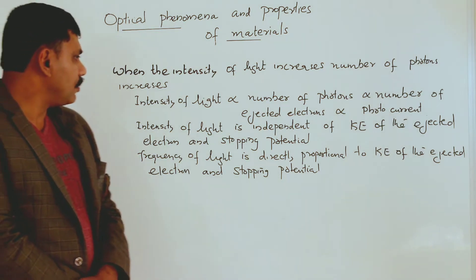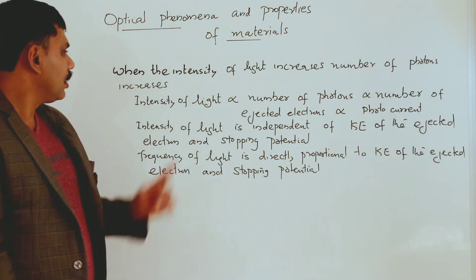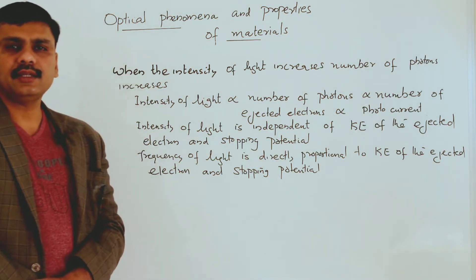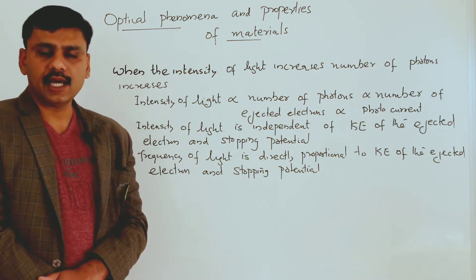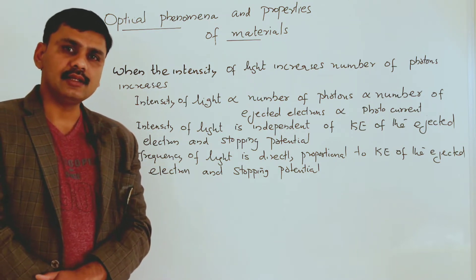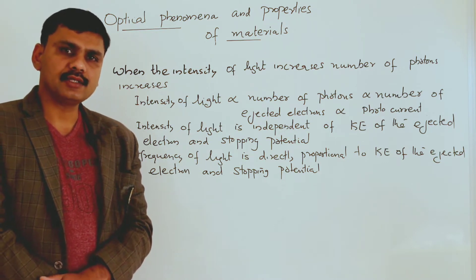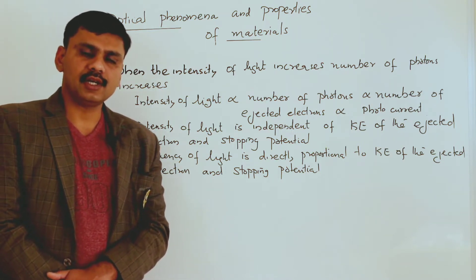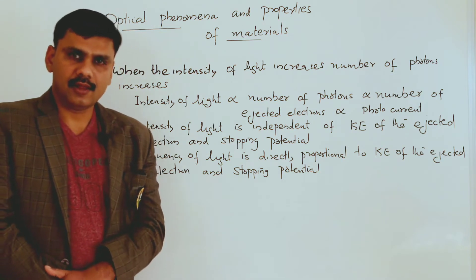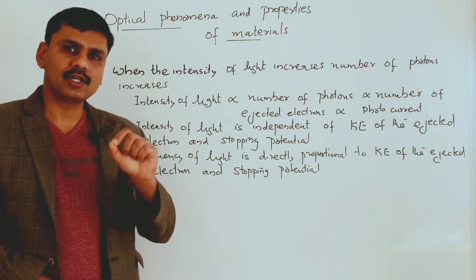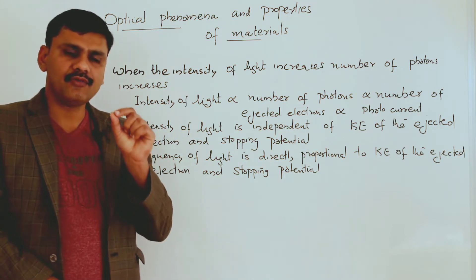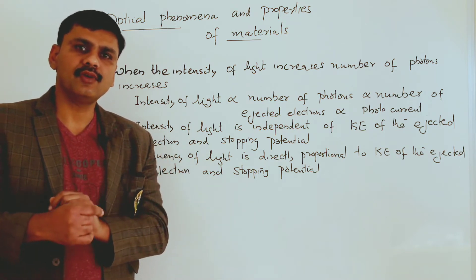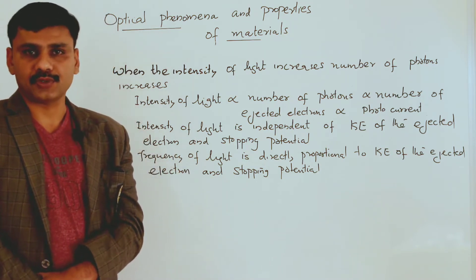These are the results from the previous experiments. When the intensity of light increases, the number of photons increases. If you are decreasing the intensity of light, the number of photons also decreases. According to the particle theory of light, a photon is a particle — one photon can eject one electron from the metal surface, giving energy to the electron. This is an instantaneous process.